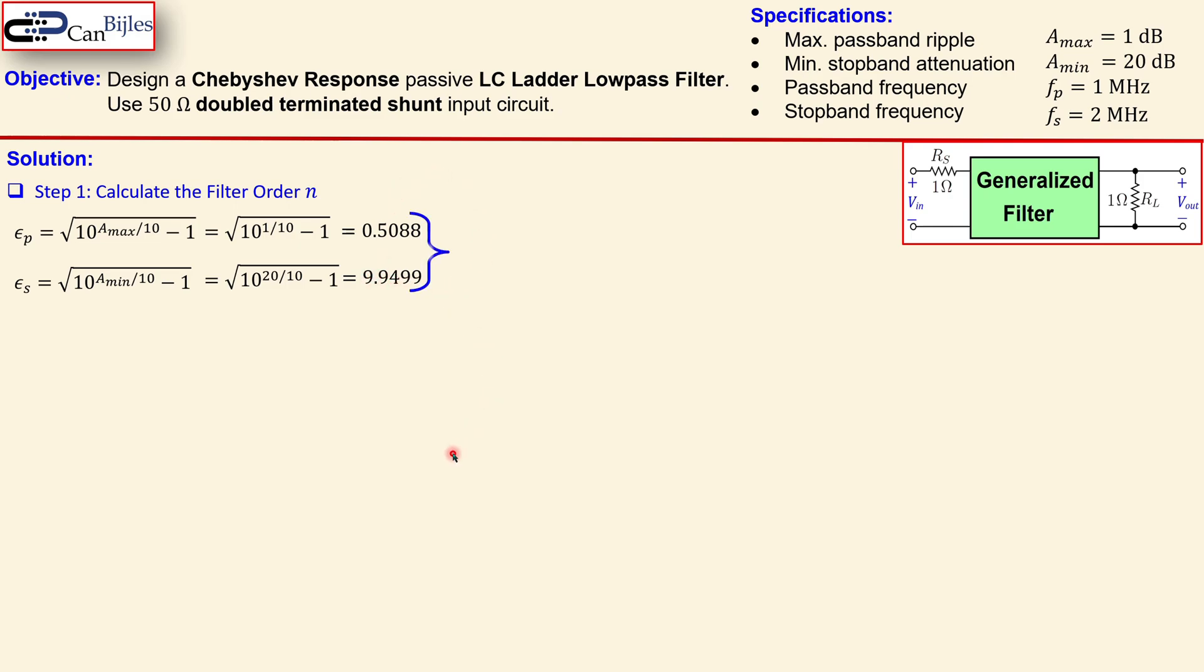This will be then taken together using the formula for the Chebyshev response low-pass filter which is different than the Butterworth. In this case we have arcosine hyperbolicus and that's different than the logarithmic. Then you can calculate now the filter order using this epsilon s and epsilon p we just calculated and also the Fs/Fp given in the specifications.